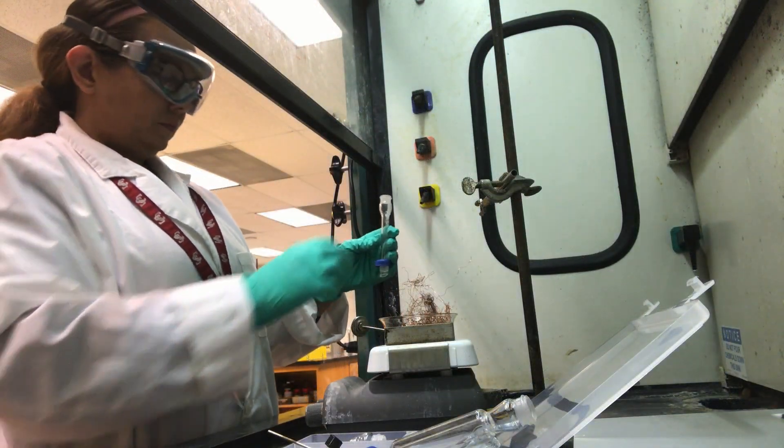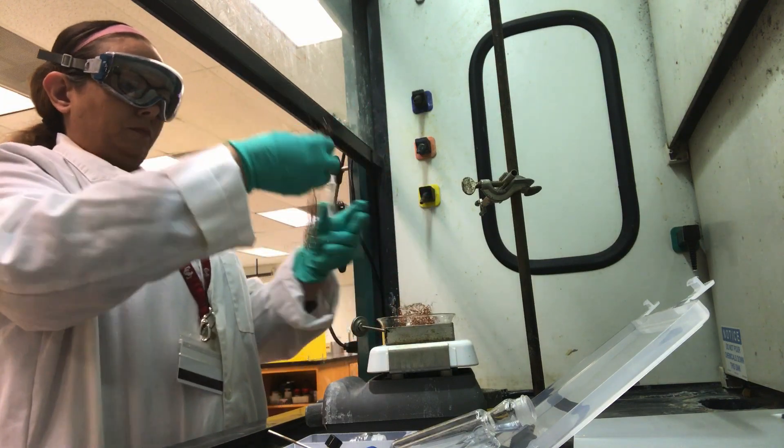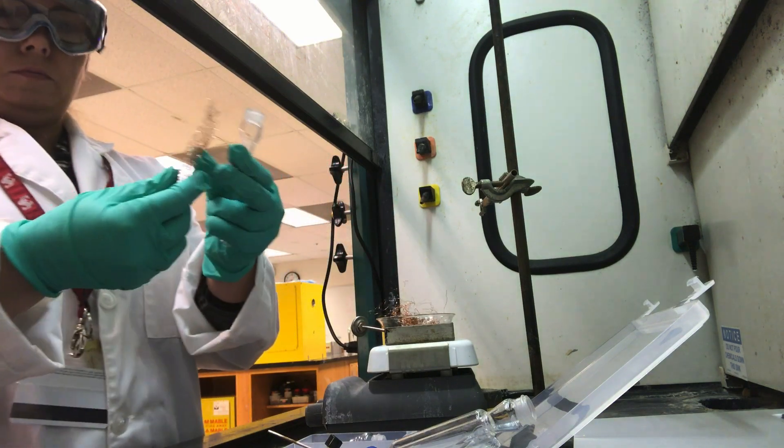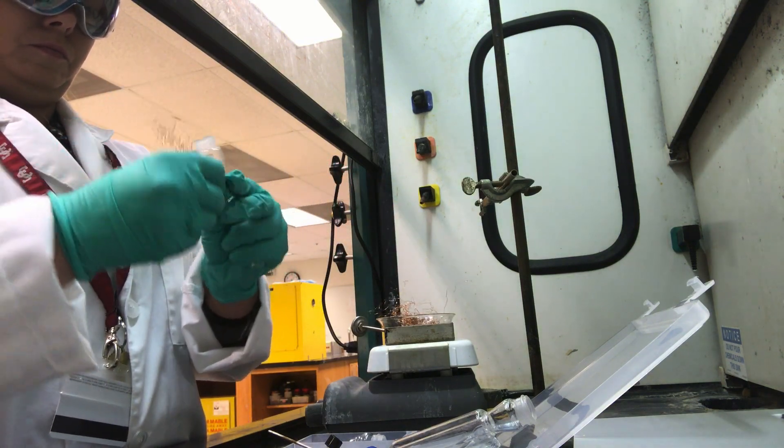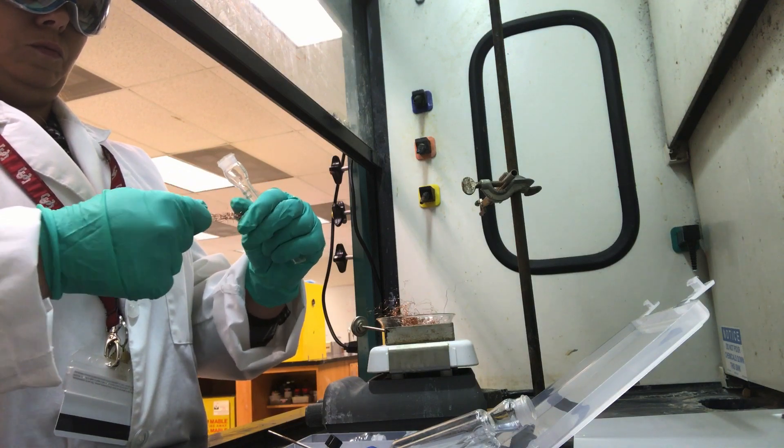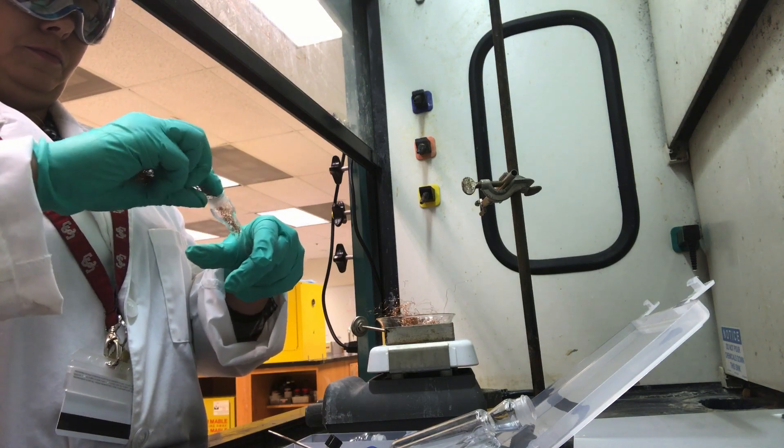Before we can attach the fractional column, we must fit it with copper mesh. This copper will serve as our theoretical plates, just a fancy term for a surface on which many evaporation condensation events occur. The first vapor to elute at the top of a distillation column is therefore enriched with the lower boiling component.